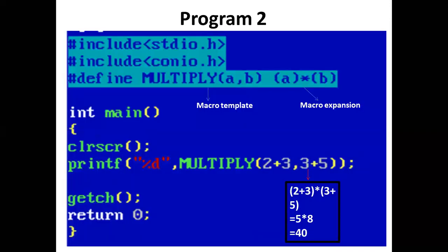Here is the output: 16. In program two, we have defined the macro MULTIPLY(a,b) as (a)*(b).